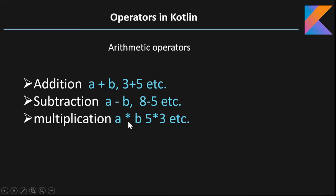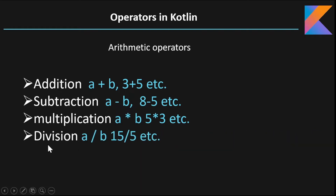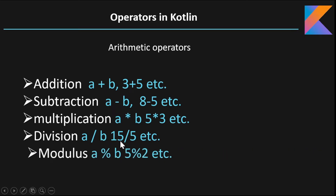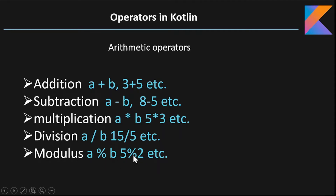The third operator is the multiplication operator, indicated by the asterisk sign in programming language. The fourth operator is the division operator, indicated by the forward slash. The fifth operator is the modulo operator. This is quite different — you haven't seen it in your day to day life. What it exactly does is it divides operand A by operand B and returns the remainder. For example, five modulus two: five is divided by two and we have a remainder of one, so it will return one.